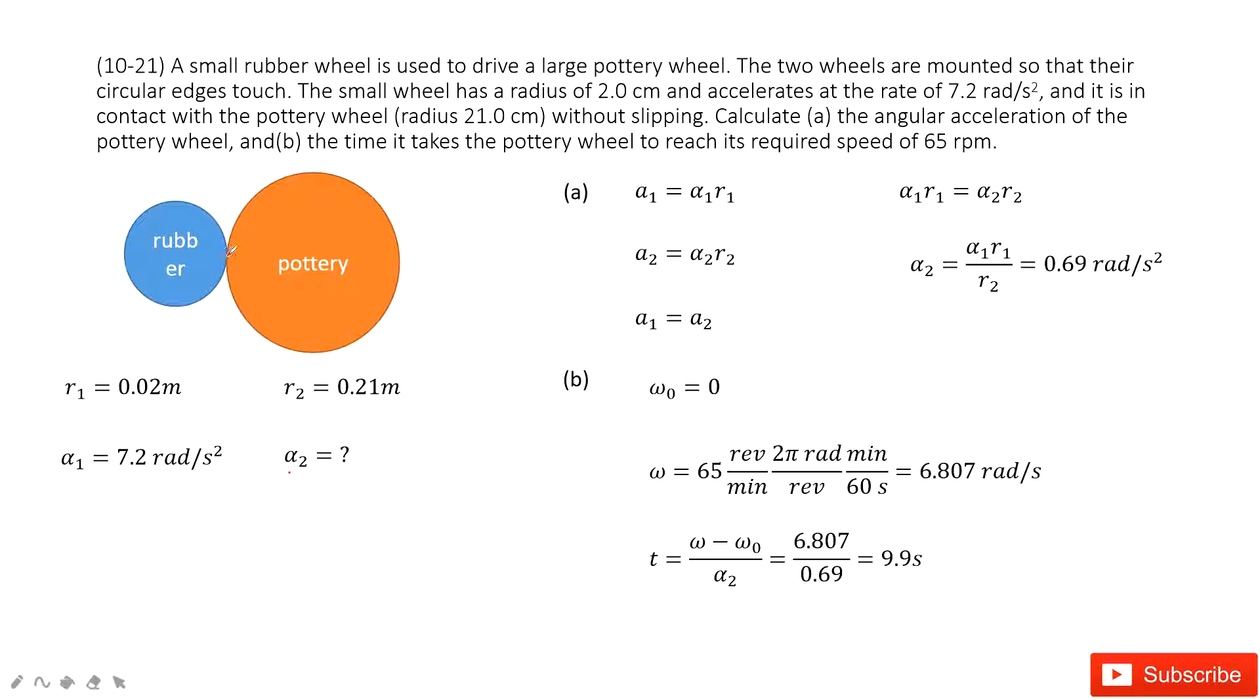First thing we look at here, as we know these two circles just attach at the edge. That means at the edge, the tangent acceleration is same. Why? Because you can see at a certain time, they move for the same distance.